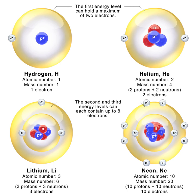The antineutron is the antiparticle of the neutron. It was discovered by Bruce Cork in the year 1956, a year after the antiproton was discovered. CPT symmetry puts strong constraints on the relative properties of particles and antiparticles, so studying antineutrons provides stringent tests on CPT symmetry. The fractional difference in the masses of the neutron and antineutron is 9 ± 6 × 10⁻⁵. Since the difference is only about two standard deviations away from zero, this does not give any convincing evidence of CPT violation.